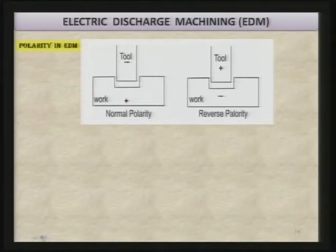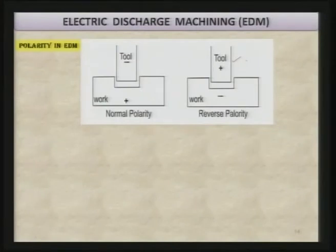There are two polarities in EDM. In normal polarity, the tool is the cathode and the work piece is the anode. However, under certain combinations of tool and work piece material, reverse polarity performs better than normal polarity. In reverse polarity, the tool is made the anode — connected to the positive terminal — and the work piece is made the cathode — connected to the negative terminal.